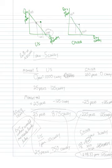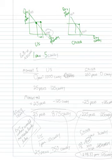The gains from trade show that the U.S. could not have achieved that consumption on its own — for the same number of pens, they get more candy. Both countries benefit from this kind of situation. If we wanted to calculate it, let's pick an example: one pen trading for five candy.